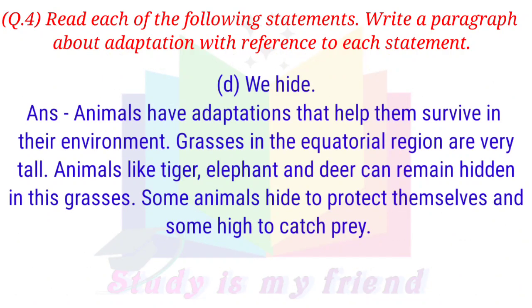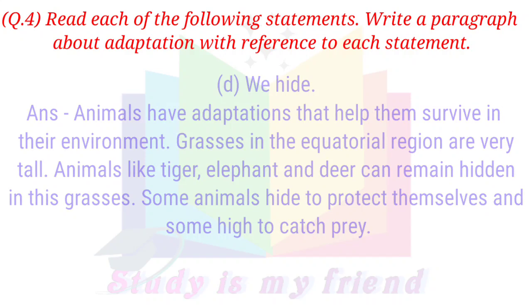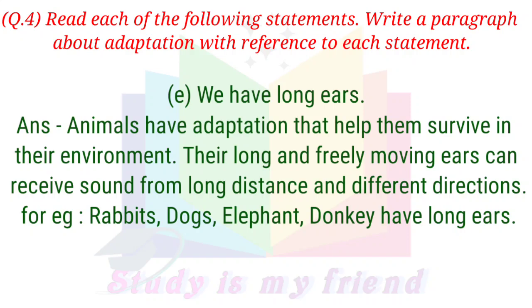D. We hide. Answer: Animals have adaptations that help them survive in their environment. Grasses in the equatorial region are very tall, and animals like tigers, elephants, and deer can remain hidden in these grasses. Some animals hide to protect themselves and some hide to catch prey. E. We have long ears. Answer: Animals have adaptations that help them survive. Their long and freely moving ears can receive sound from long distances and different directions. For example, rabbits, dogs, elephants, and donkeys have long ears.